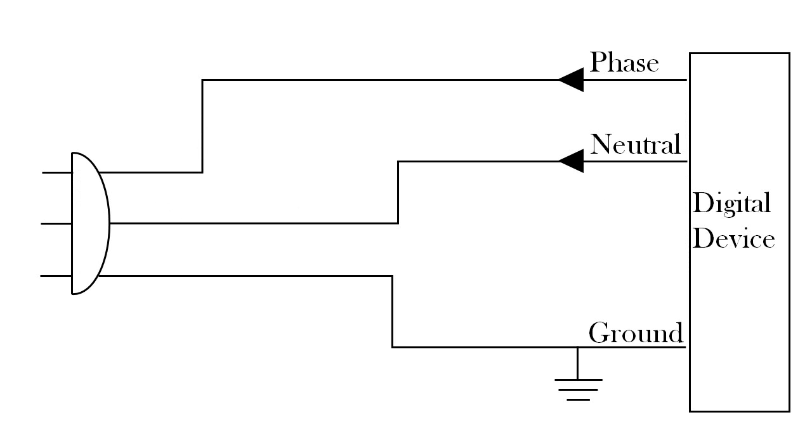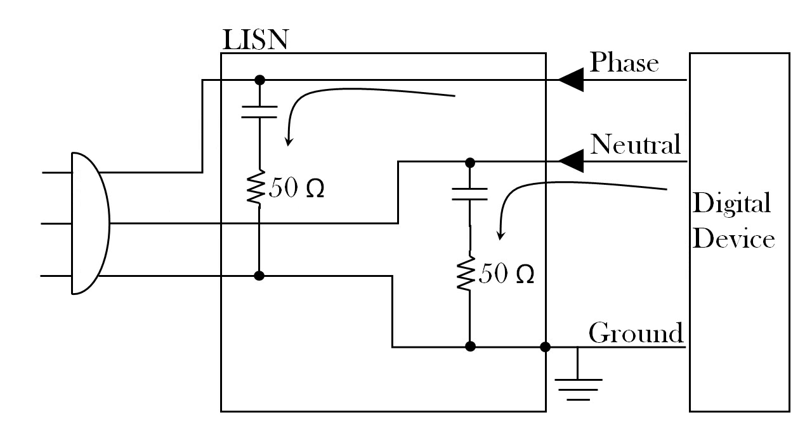The LISN essentially uses a capacitor network to divert high frequency noise currents off the phase and neutral lines through the 50 ohm resistors. At the 60 Hz power frequency, the capacitors basically look like open circuits, so no power current is diverted through them. The 50 ohm resistance is chosen because the standard input impedance for spectrum analyzers and other EMC measurement devices is 50 ohms.